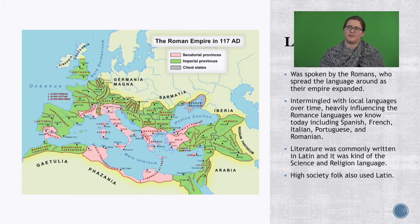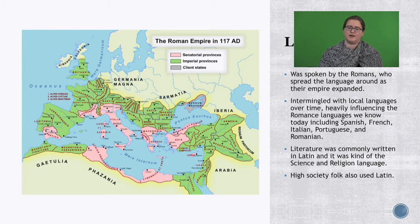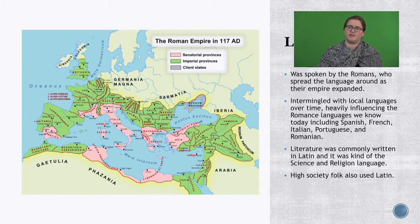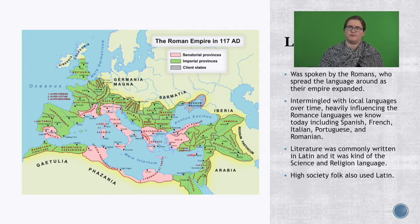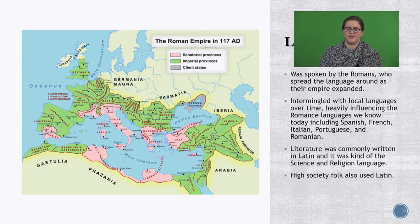Onto the history. Latin got spread around a lot because it was spoken by the Romans, who had a pretty big empire. Latin was spread as the Romans moved into many countries — they spoke Latin alongside the native languages, and they kind of mixed. So Latin has heavy influence on the Romance languages, like Spanish, French, Italian, Portuguese, and Romanian. Latin was also like the fancy language of the time — great literature, scientific work, Christian theology: the fancy stuff.